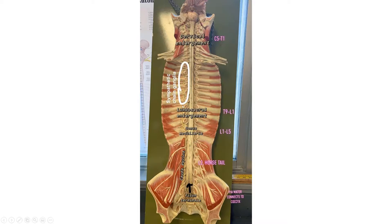Sympathetic chain ganglia — we'll talk about those with the autonomic nervous system — but on each side of the spinal cord you have these ganglia. And then these little triangles that you can barely see on the side of the spinal cord are the denticulate ligaments, which basically hold the pia mater to the other layers. They're little triangular structures right along the side of the spinal cord.